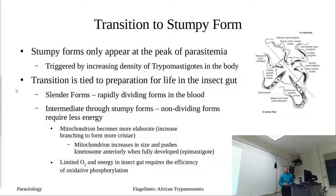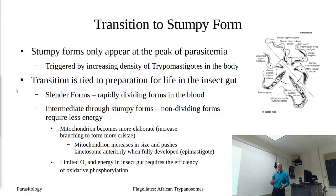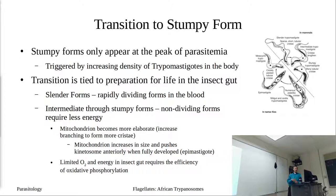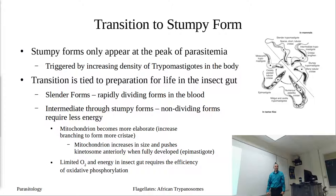The intermediate through stumpy forms are non-dividing — they don't require as much energy. What's happening is the enlargement and increased complexity of the mitochondria — it's becoming more elaborate. As it increases in size and complexity, it applies physical pressure to the kinetosome. When fully developed with a fully functioning mitochondria, it would have pushed the kinetosome so far forward that it flips position with the nucleus — which is our transition to the epimastigote stage. It's really about limited oxygen and glucose, and why the transition happens.